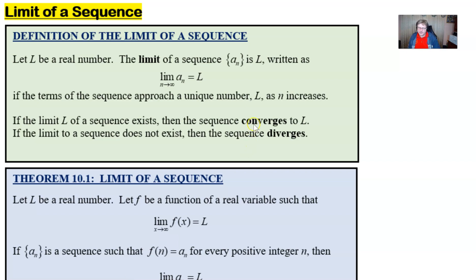We start off with more or less a definition here in the green box. And this definition says you're going to let L be a real number. We can say that the limit of a sequence, a_n, is L, and we can write it as our typical limit notation. Limit as n approaches infinity of a_n is equal to L if the terms in the sequence approach this unique number L as n increases. So really nothing different than our standard limit idea.